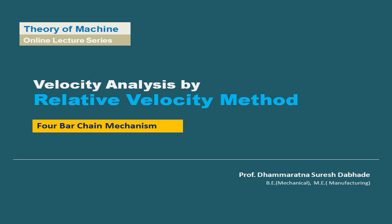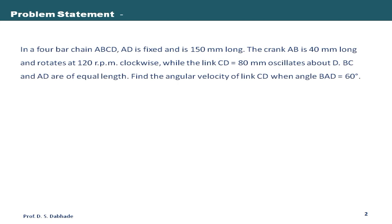Hello friends. In this video we are going to discuss the relative velocity method to find out the velocities of a four-bar chain mechanism. By using the relative velocity method by vector diagram we are going to find out the velocities of the various links. So let us start with the problem statement. In a four-bar chain ABCD, AD is fixed and it is 150 mm long. The crank AB is 40 mm long and rotates at 120 RPM in the clockwise direction. The link CD is 80 mm long and oscillates about D. BC and AD are equal in length. Find the angular velocity of link CD when angle BAD is 60 degrees.